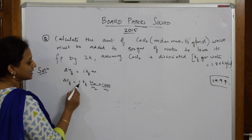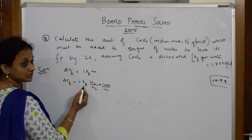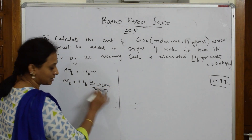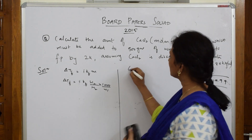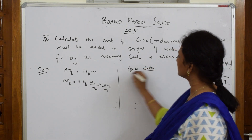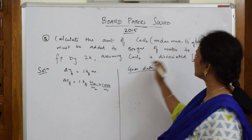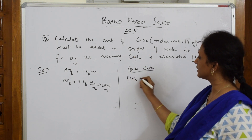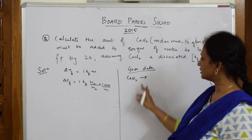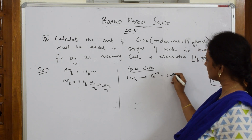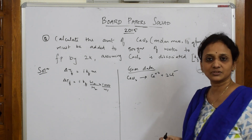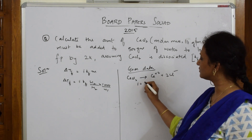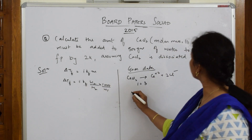Let's note the given data. The Van't Hoff factor i is not directly given, so we calculate it. Calcium chloride dissociates in water as: CaCl₂ → Ca²⁺ + 2Cl⁻, giving 1 + 2 = 3 particles. So i = 3. KF for water is 1.86 K·kg/mol. W₂ (weight of solute) is what we need to find. M₂ (molar mass of CaCl₂) = 111 g/mol. W₁ (weight of solvent) = 500 g.